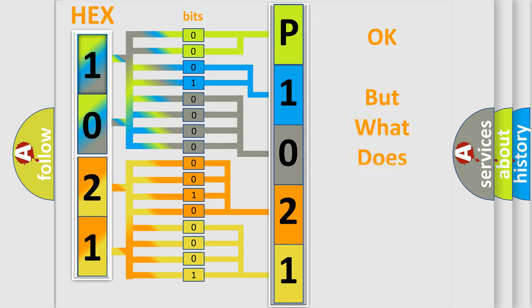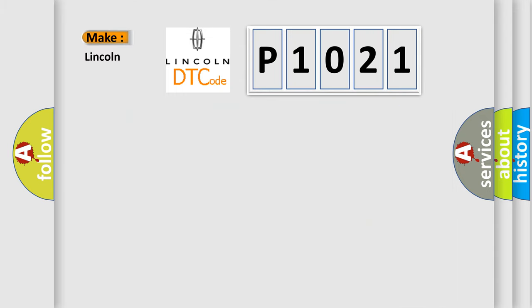The number itself does not make sense to us if we cannot assign information about what it actually expresses. So, what does the diagnostic trouble code P1021 interpret specifically for Lincoln car manufacturers?